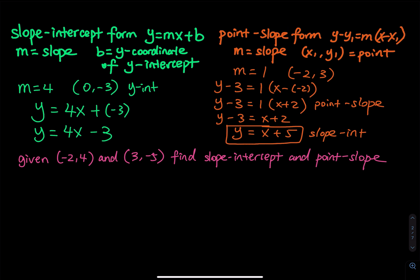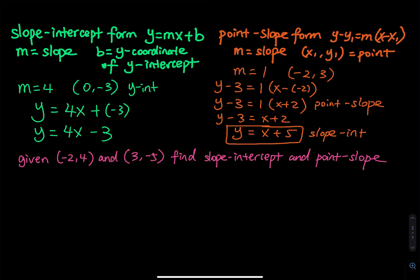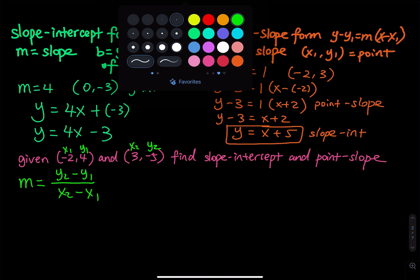Let me ask the problem in a different way. I have two points: negative 2, negative 4, and 3, negative 5. Find both the slope-intercept form and the point-slope form. We do not know the slope, so let's find it using the slope formula: m equals (y2 minus y1) divided by (x2 minus x1). Label x1, y1, x2, y2, and plug in.